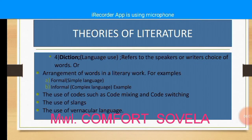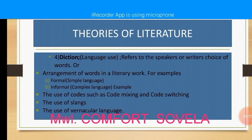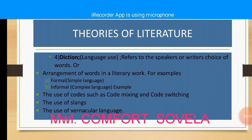Another part of form is diction. Diction, or language use, refers to the speaker's or writer's choice of words, or the arrangement of words in a literary work. The arrangement of words in a literary work may be formal — sometimes called simple language — or informal or complex language. Informal or complex language may use code switching and code mixing, as well as the use of vernacular language, which is not found in formal language.